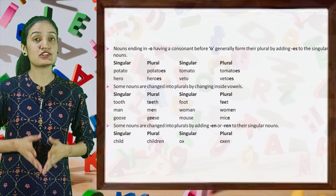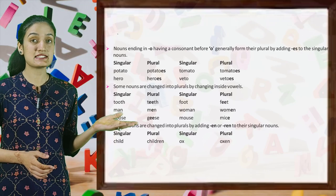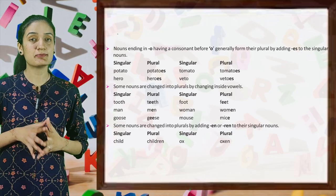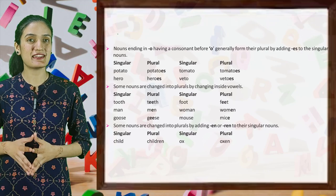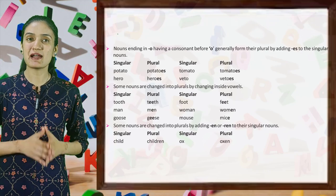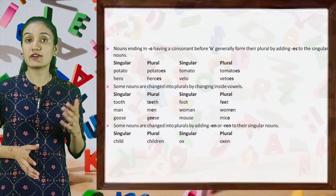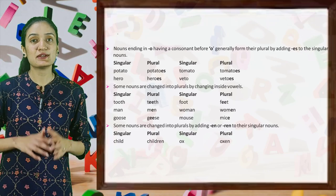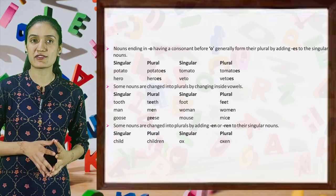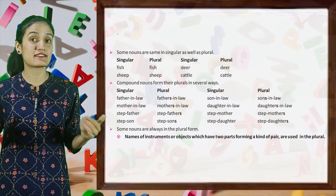Some nouns are changed into plural by changing inside vowels: tooth → teeth, foot → feet, man → men, woman → women, goose → geese, mouse → mice. Some nouns are changed into plural by adding EN to their singular: child → children, ox → oxen.